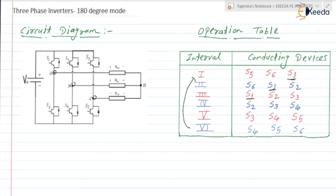The same applies for S3, S4, S5, and S6 — each switch conducts for 180 degrees. That is why it is known as the 180 degree conduction mode. In the next video, we will discuss the circuit operation during the first three intervals and draw the waveforms for the phase voltage and the line voltage.